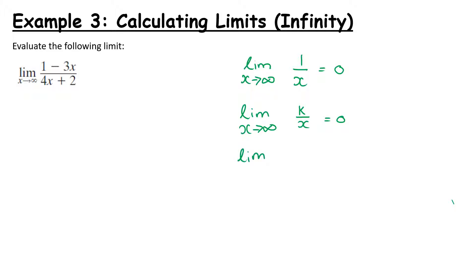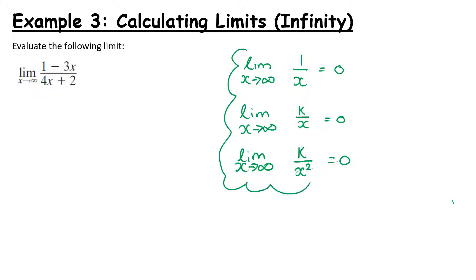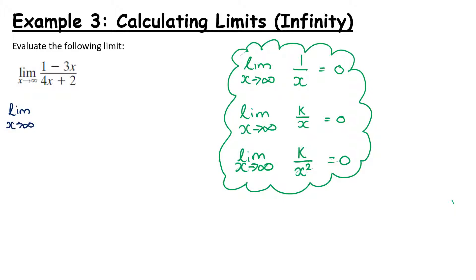This is even true no matter what power of x we have — even 1 over x squared still goes to 0, it just gets bigger quicker. These ideas are our key tools to find the limit when x tends towards infinity. Our method is to get everything as a fraction over x — we divide across by the variable to the highest power. In this case, the variable to the highest power is x.